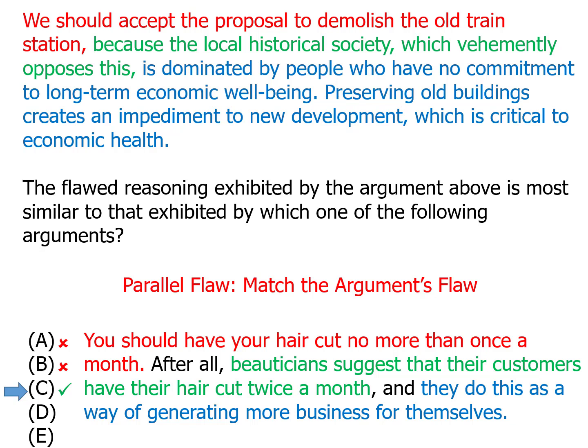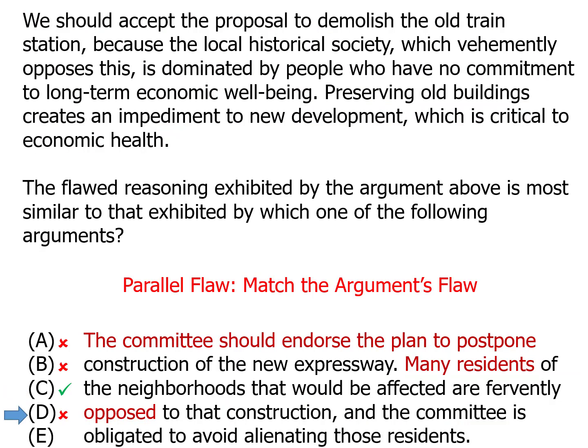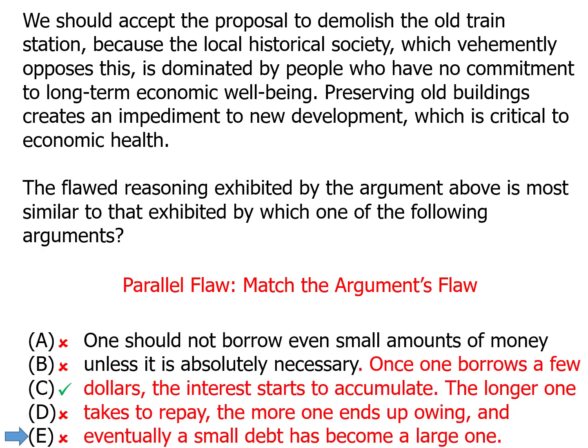Let's look at the other answers to see why they're wrong. Answer choice D is wrong because in this argument the people are getting what they want — they are opposed to the construction, and the committee is going to endorse the plan to postpone the construction. Answer choice E is wrong because we don't have someone we're opposing; instead, we just have a chain of effect — borrow a little bit of money, the debts pile up. Since the argument isn't similar, it's not our answer. Answer choice C was our answer.